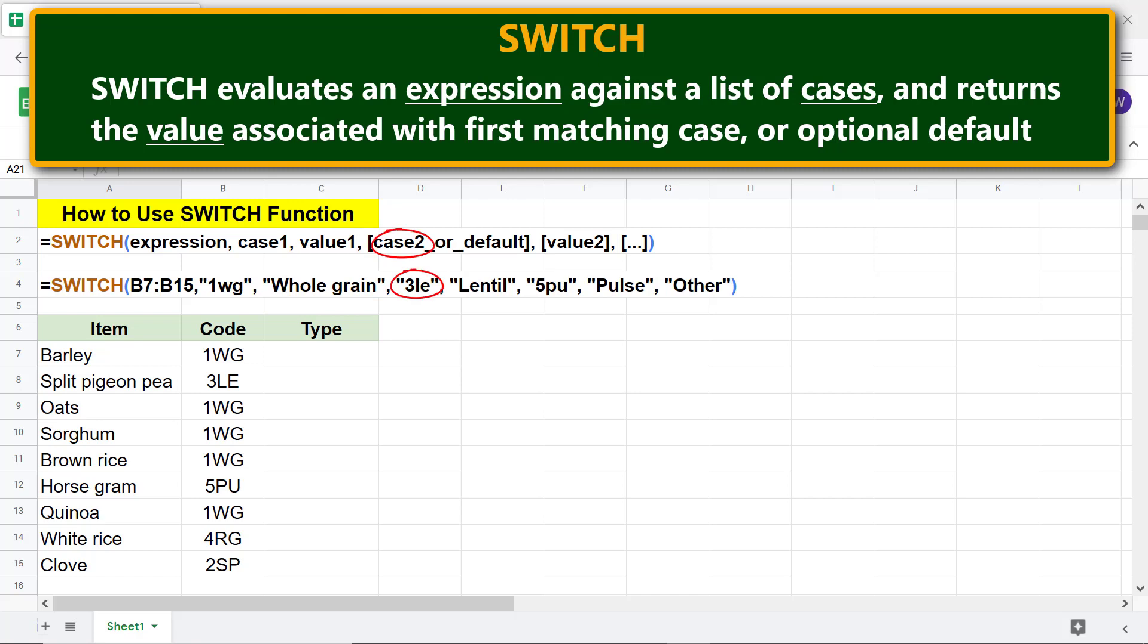Case 2 is the optional second text or number. Default value is optional; if it is specified it will be returned if none of the cases are found in the expression. Value 2 is the second value to be returned if case 2 is found in the expression.